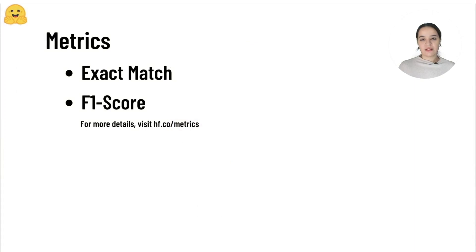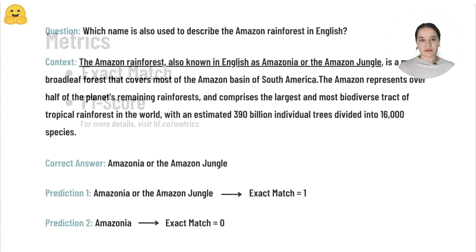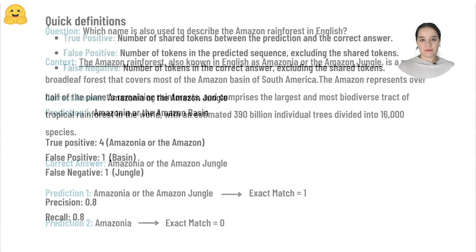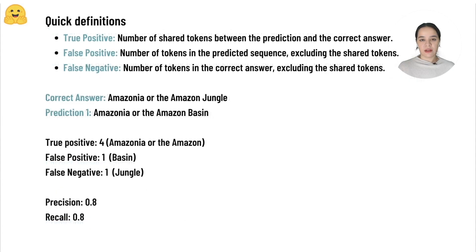The task is evaluated on two metrics: exact match and F1 score. As the name implies, exact match looks for an exact match between the predicted answer and the correct answer. A common metric used is F1 score, which is calculated over tokens that are predicted correctly and incorrectly.